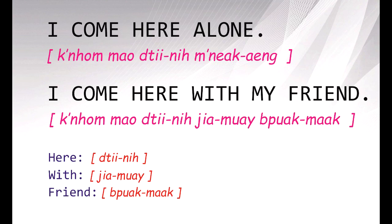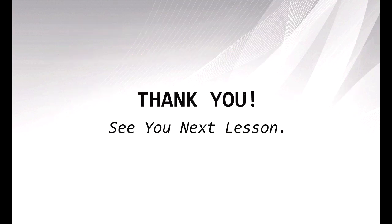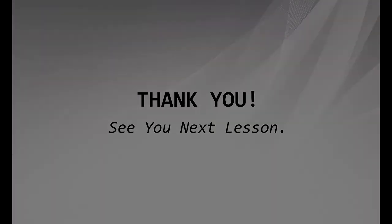Below is the vocabulary: 'here' — tì nì; 'with' — chia mùi; 'friend' — pụ mạc. Let me read the sentences again: I come here alone — khnjom ọt nhi dây, mẹ nè ảnh. I come here with my friend — khnjom ọt nhi dây, chia mùi pụ mạc.